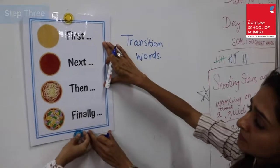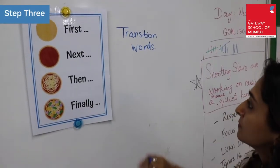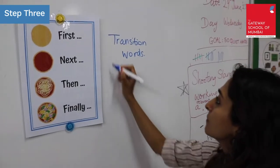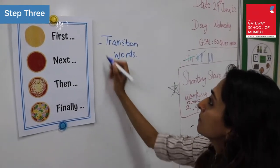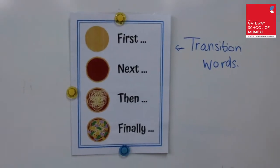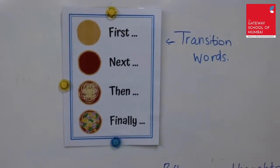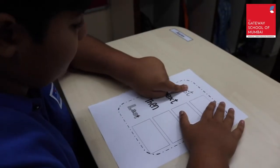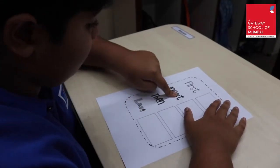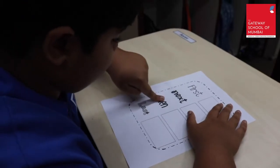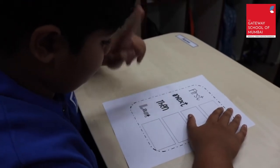Step three is introducing them to the transition words used during retell, which allow them to put their thoughts in a sequence: first, next, then, finally. A visual of the transition words provides support to retell in the correct order.